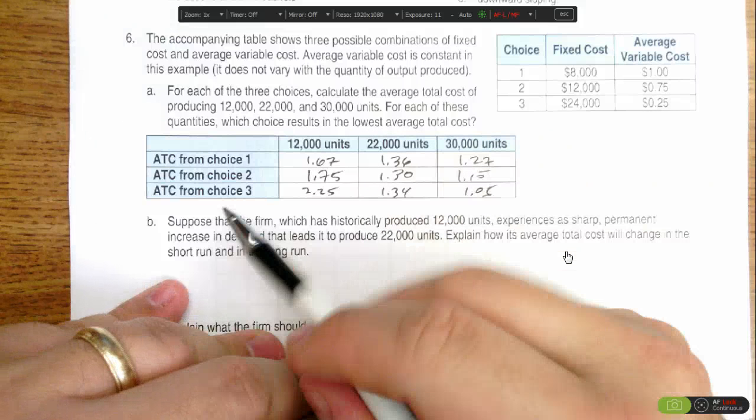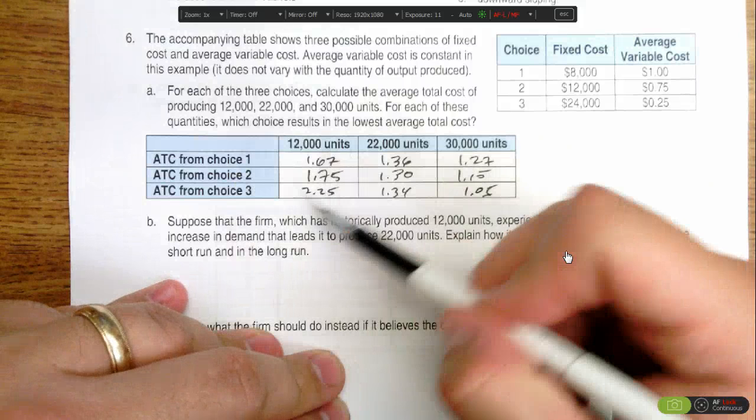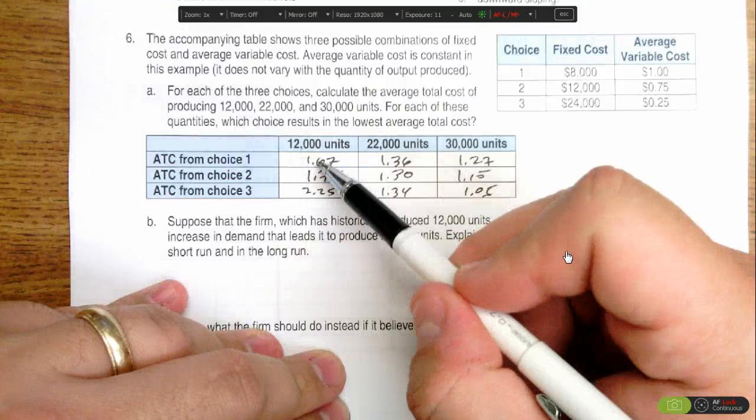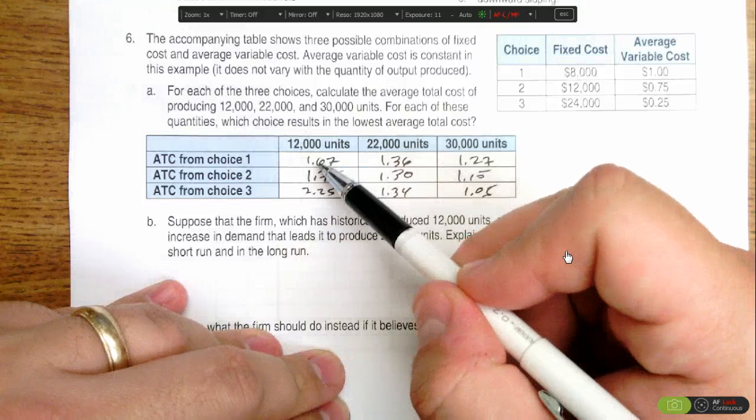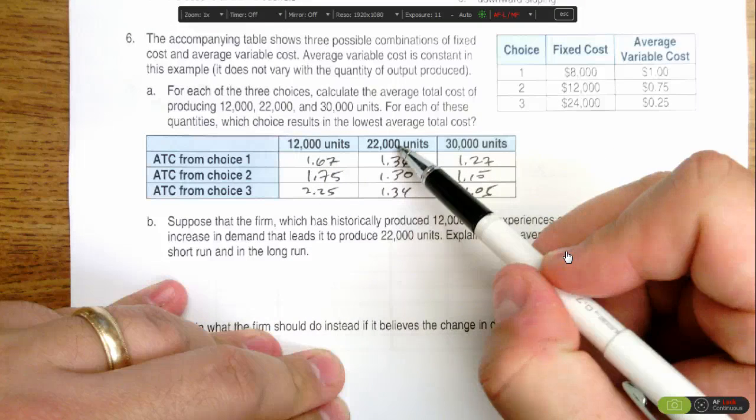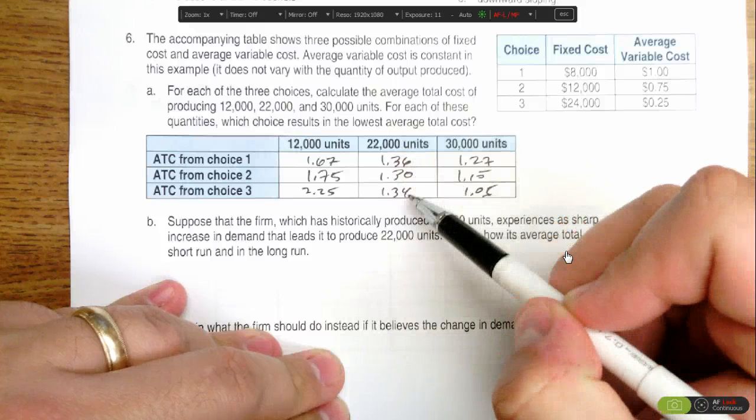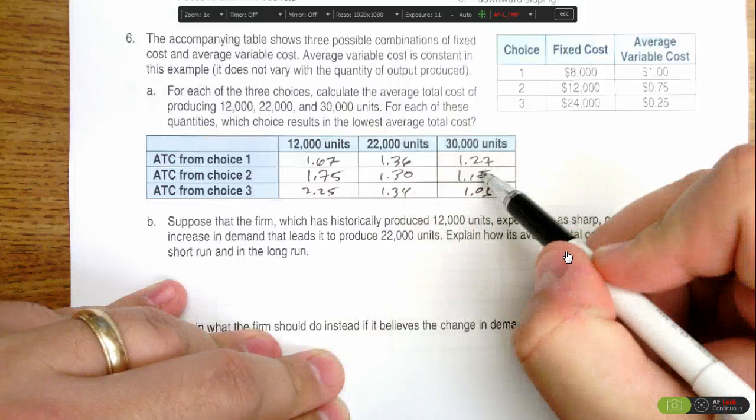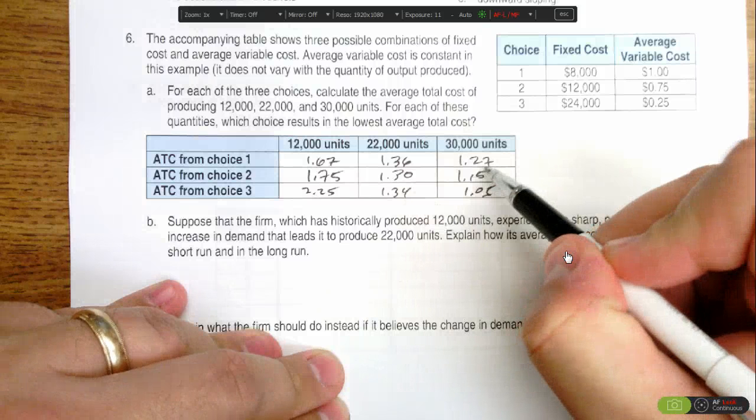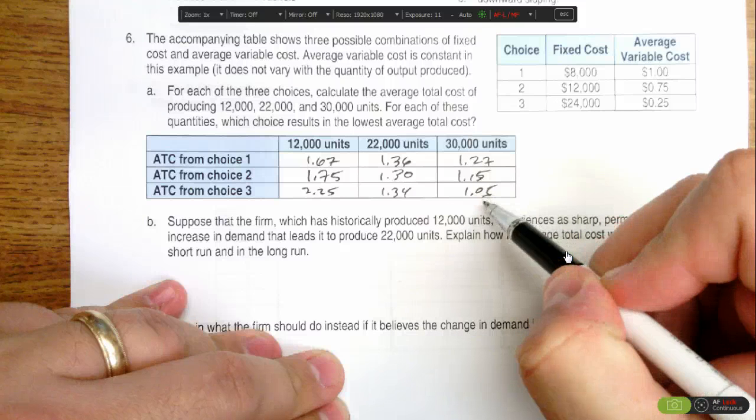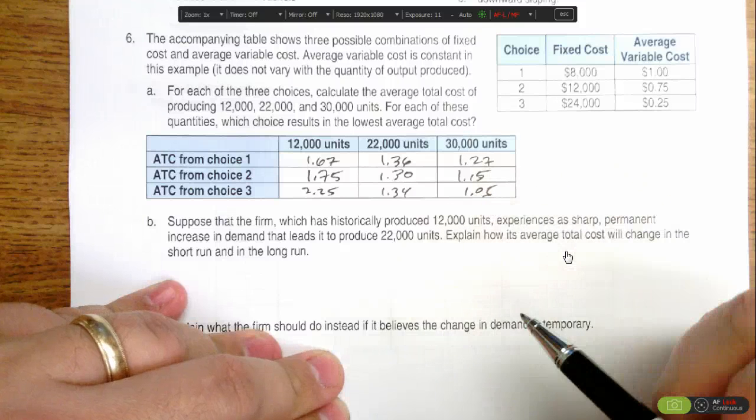So if I'm doing 12,000 units, my best option is choice one because it has the lowest average total cost. If I'm doing 22,000 units, I would switch to choice two because its average cost is the least among these three options. And if I'm doing 30,000 units, I would pick option three because at a dollar and five cents on average per unit, it's cheaper than either of my other two options.